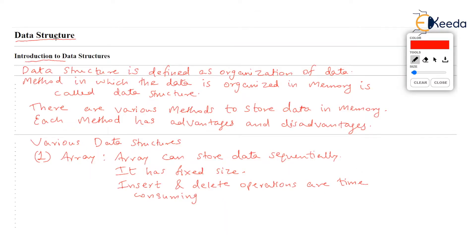First of all, what do you mean by data structure? These two words, data and structure — what does it mean? The definition is very easy. A data structure is the arrangement of data. The arrangement of data in memory is called data structure. Data structure is defined as the organization of data stored in memory — the method in which data is organized in memory is called data structure.